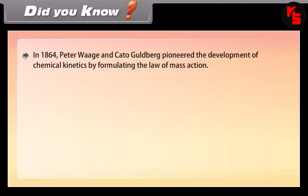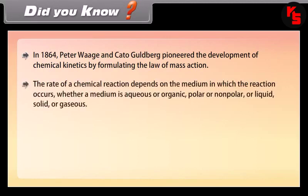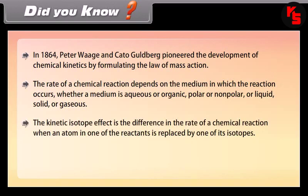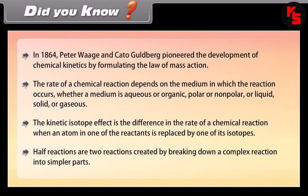In 1864, Peter Waage and Cato Guldberg pioneered chemical kinetics by formulating the law of mass action. The rate of a chemical reaction depends on the medium — whether aqueous or organic, polar or non-polar, liquid, solid, or gaseous. The kinetic isotope effect is the difference in the rate of a chemical reaction when an atom in a reactant is replaced by one of its isotopes. Half reactions are two reactions created by breaking a complex reaction into simpler parts.